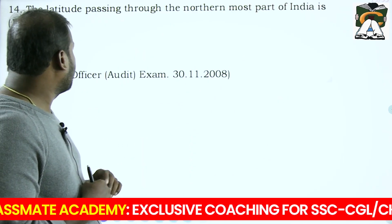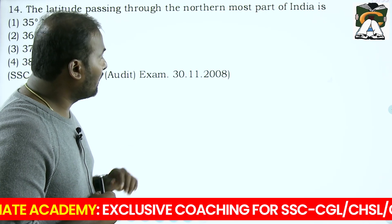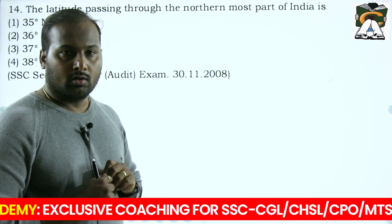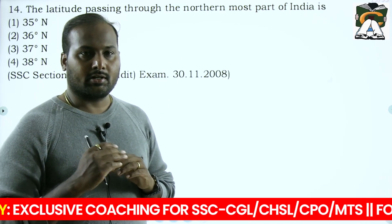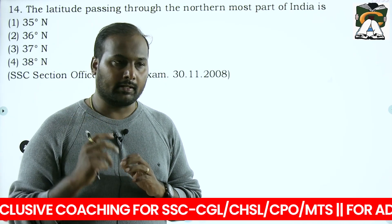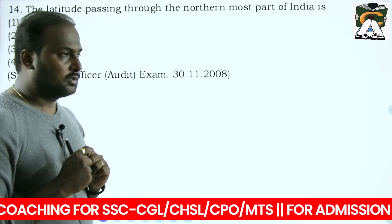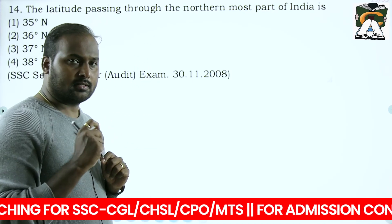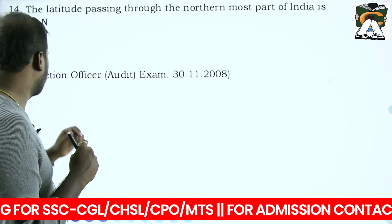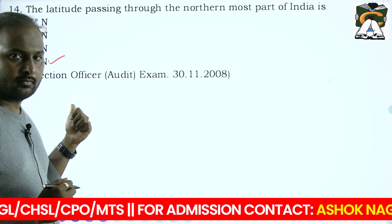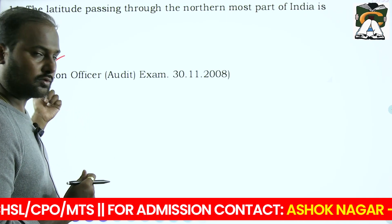'The latitude passing through the northernmost part of India' - the latitudinal extent of India goes up to 37 degrees 6 minutes, so the answer is close to 38 degrees. That is the northernmost point of India.